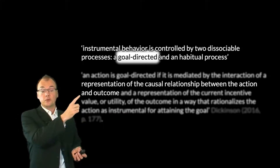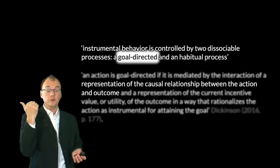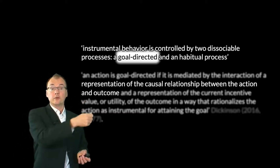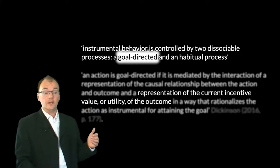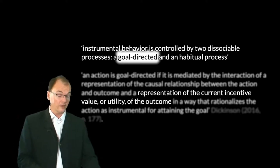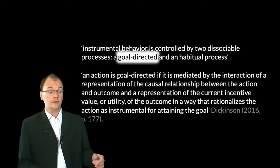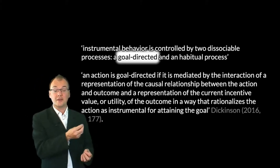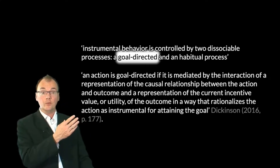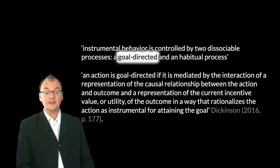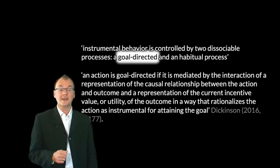The way Dickinson sets this up: that representation of the causal relationship between the action and the outcome is, in our simple view, just the belief — the belief that pouring is a way of filling Zach's glass. Likewise, when Dickinson says 'representation of the current incentive value or utility of the outcome,' in our terms that's a desire — a desire to fill Zach's glass. Dickinson uses more general terms because he wants a view that doesn't tie him down to specific philosophical claims about beliefs and desires. But fundamentally, he's offering the same picture as the standard answer, just from the point of view of an animal learning theorist. So the goal-directed process is the process which involves belief, desire, and intention, roughly speaking.